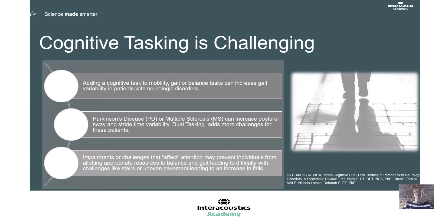We know that cognitive tasking is challenging, and when we add a cognitive task to a mobility, gait, or balance task, it can increase gait variability — especially in patients with neurological disorders. There is lots of literature showing that in Parkinson's disease and multiple sclerosis, dual tasking can increase postural sway and variability in stride time. Any impairment that affects attention may prevent an individual from allocating appropriate resources to maintain balance in difficult situations like walking on uneven pavement, and this can lead to a fall. Falls oftentimes have very long-term negative effects.